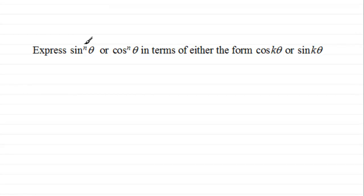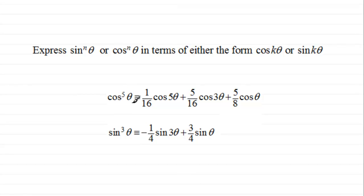Quite often we're asked to express sine to the power n of theta or cos to the power n of theta in terms of either the form cos k theta or sine k theta — in other words, in multiple angles. I've got a couple of examples here: cos to the power 5 theta expressed in terms of cos 5 theta, cos 3 theta and cos theta; and sine cubed theta expressed in terms of sine 3 theta and sine theta. To be able to do this requires the use of some identities, and that's the purpose of this video.